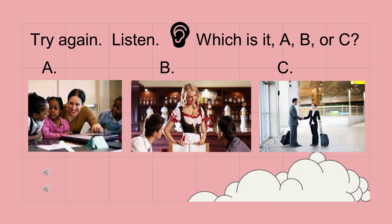Try again. Listen to the dialogue. Is it photo A, B, or C? Hello. I'm Mary Green. I'm Klaus Springer from Frankfurt. Nice to meet you. There is a strong accent on this dialogue. The speech is very formal, so it must be photo C. Klaus Springer is from Frankfurt, which is in Germany. English is probably his second language. They are in professional business suits and are meeting each other for the first time. It looks like an airport.